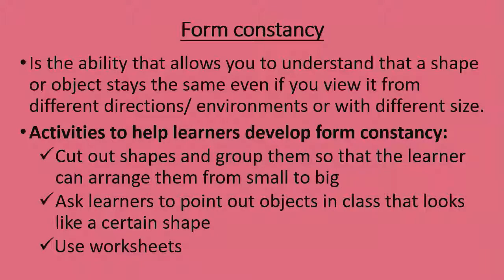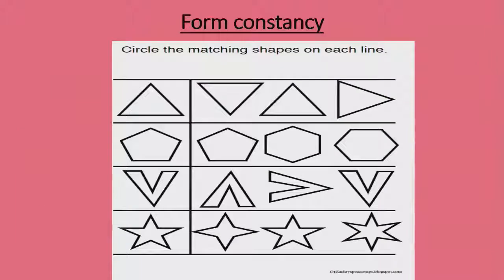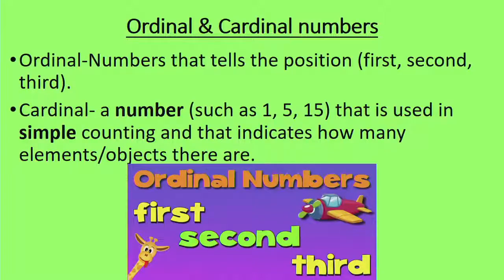Activities to help learners develop form constancy: the child must be able to recognize shapes outside of what they learned in class — for instance, knowing that a plate at home is also a circle. I cut out shapes and ask learners to arrange them from big to small. I ask learners to point out objects in the class that look like a certain shape — if I have a square, find another square such as the window. I can also use worksheets where the child finds the shape with the same direction and form. Ordinal numbers tell position — first, second, third — whereas cardinal numbers are the counting numbers: one, two, three, four, five.